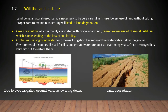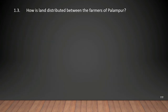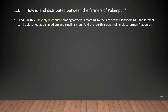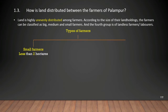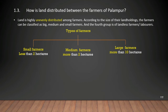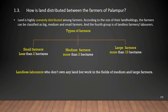How is the land distributed in Palampur? In India, land holdings are generally very small and highly unevenly distributed among farmers. According to the size of their land holding, farmers can be classified as big, medium, and small farmers, plus a fourth group of landless laborers. Small farmers have less than two hectares, medium farmers have more than two hectares, large farmers have more than ten hectares, and landless laborers own no land but work in the fields of medium and large farmers. A hectare is the standard unit to measure land.